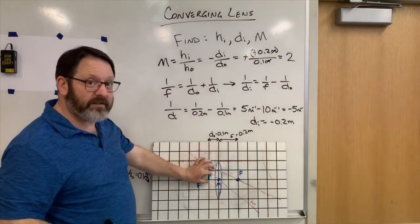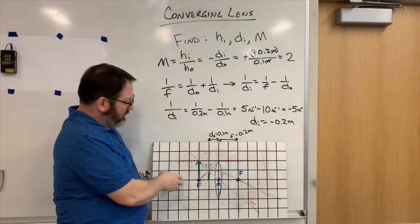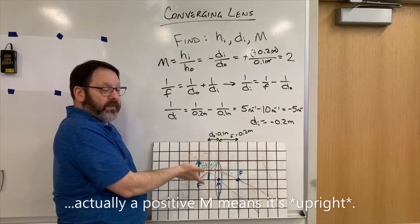So the image is 2 times as large as the object. And it's a positive number. Magnification is positive, so that means it's enlarged. So that's good too.